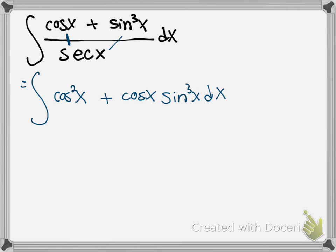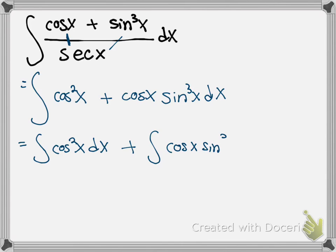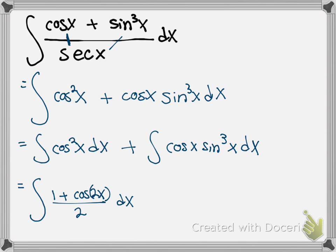I'm going to break this up into two separate integrals. The first is the integral of cosine squared of x dx, and the second is the integral of cosine of x times sine cubed of x dx. For cosine squared, there's a nice trig identity — the half-angle formula — which gives us 1 plus cosine of 2x divided by 2.